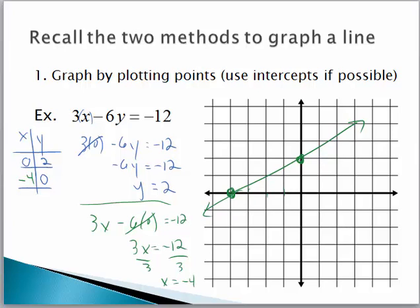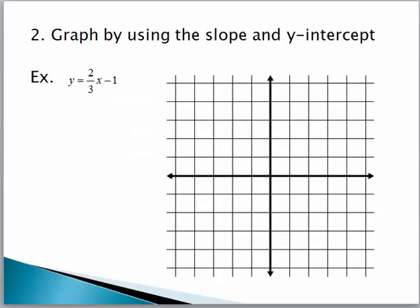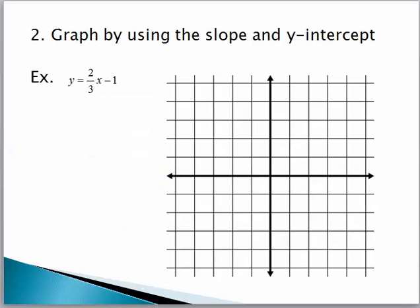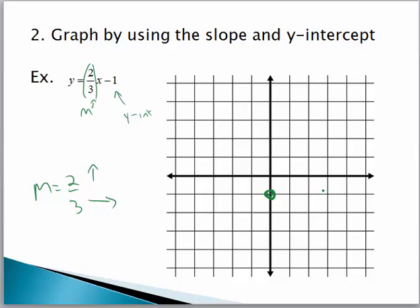That was one method you learned. The other method, if you're given an equation in slope-intercept form — or you could put this equation into slope-intercept form — there's the slope right here and this is the y-intercept. These are maybe easier to solve. You just identify the y-intercept, which is at negative 1, and you see that the slope is 2 thirds, so you go over 3 and up 2 from that point. Over 3, up 2 — there's another point, and there's your line.